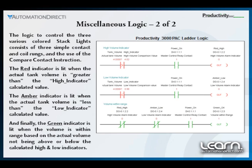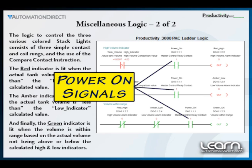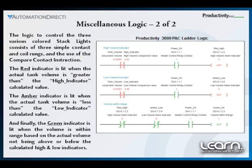A normally open contact using the Power On tag name is used in each indicator rung to turn off the corresponding indicator if the Power On e-stop circuitry is powered off.